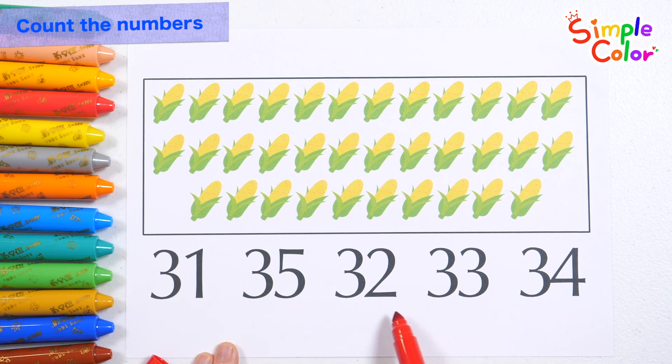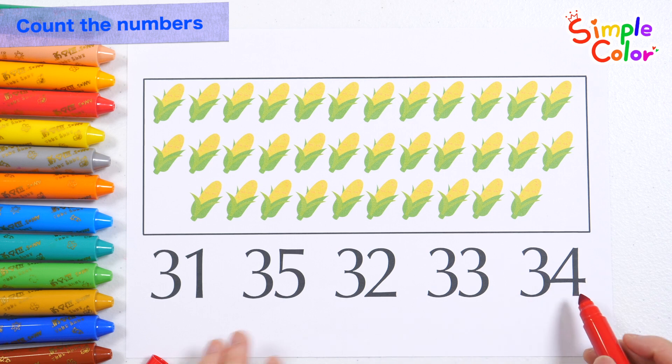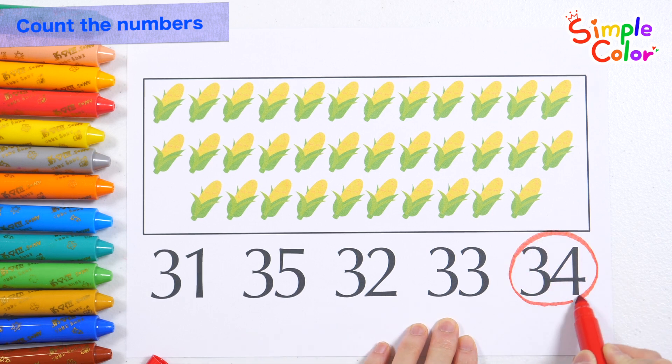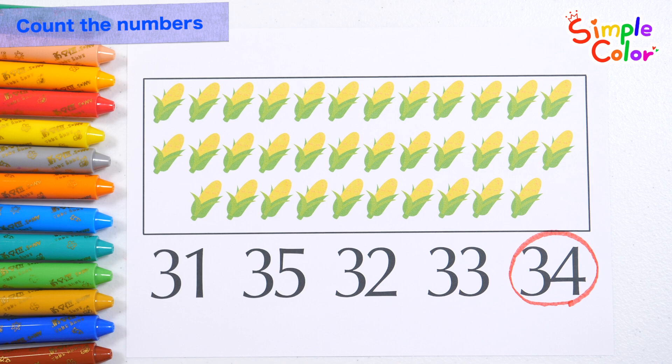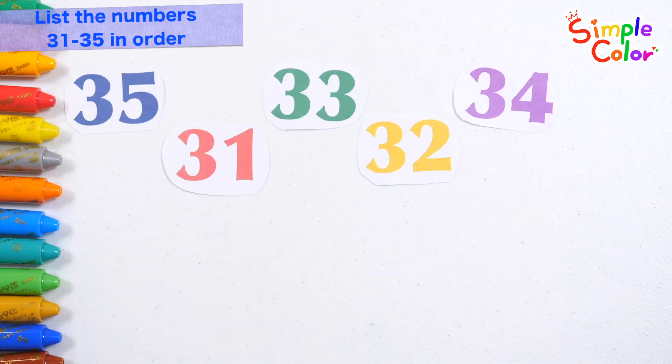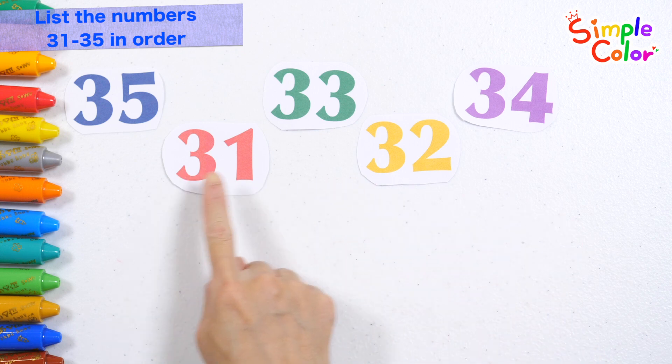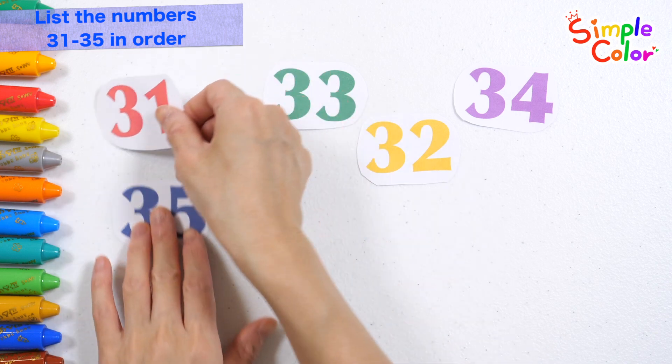There are 34 corns. Let's find the number of corns. What is the number 34? Found it! 34. Let's list them in order from smallest to largest. Which number is the smallest? That's right! 31.